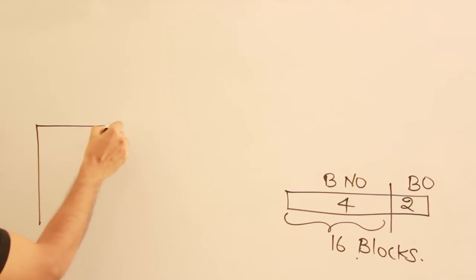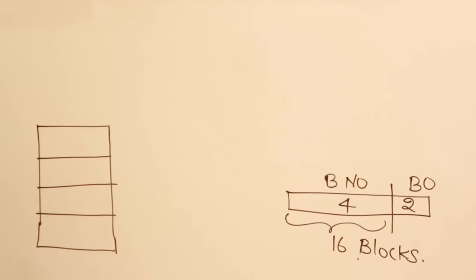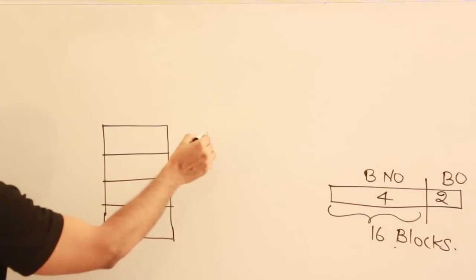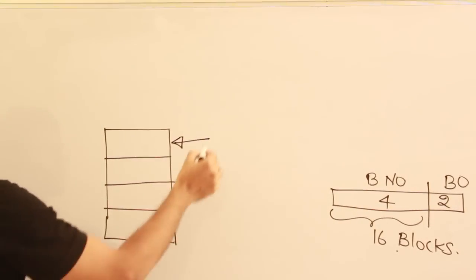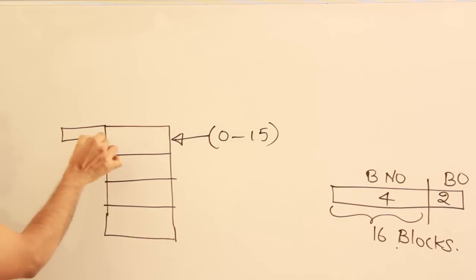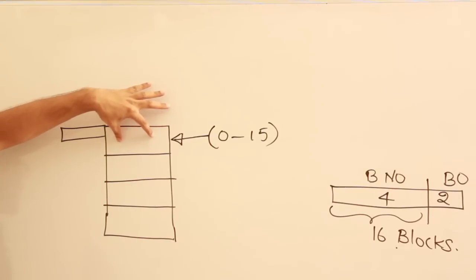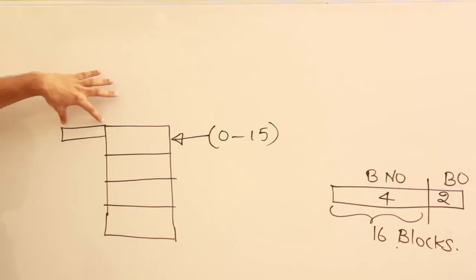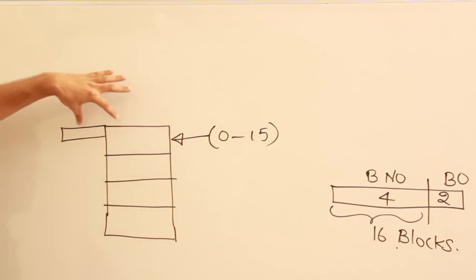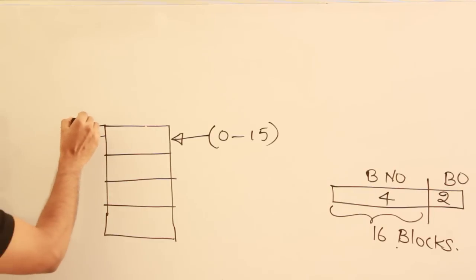The problem now is: if a cache line is containing a block from main memory, it could be any one of blocks 0 to 15. So how many tag bits should there be? The tag line tells us which blocks can sit in a given cache line. Since all 16 blocks of main memory can sit in any line, each line has to differentiate between all 16 blocks.